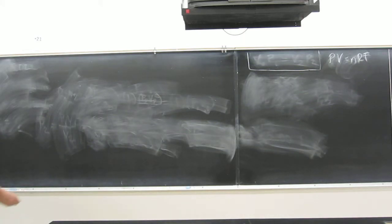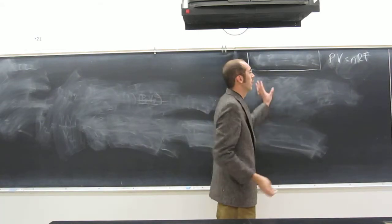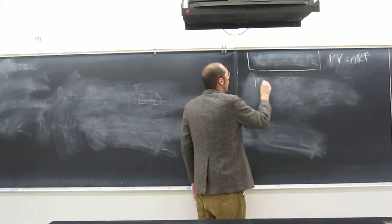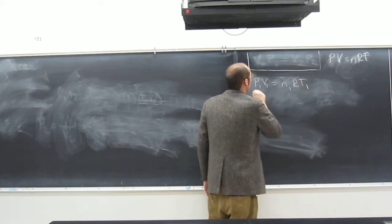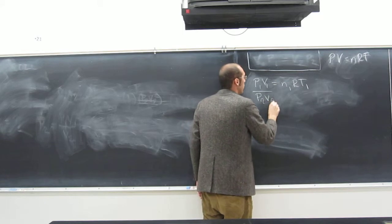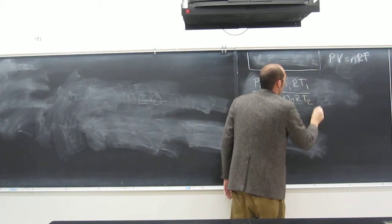So we can start with PV equals nRT, and we'll get Charles Law. I'll show you what Charles Law is in a second. So PV, P1, V1, n1, R, T1, T2, V2, n2, R, T2, right?